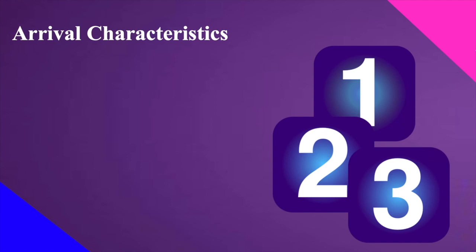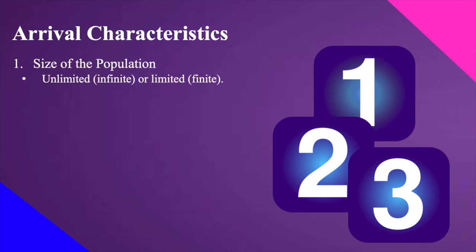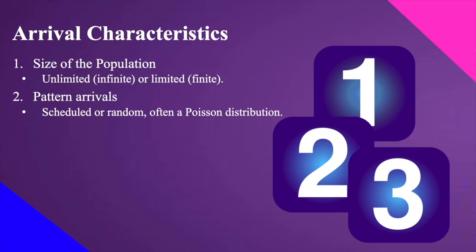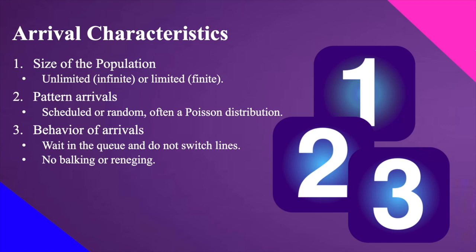The arrival characteristics of a queuing system include: first, the size of the population — which can be unlimited (infinite) or limited (finite). Second, the pattern of arrivals — scheduled or random, often following a Poisson distribution. Third, the behavior of arrivals — whether customers wait in the queue without switching lines, or exhibit bulking or reneging.